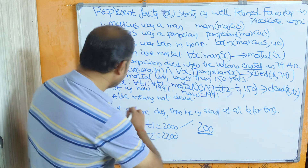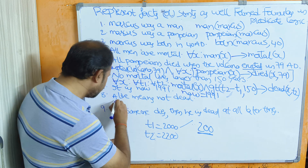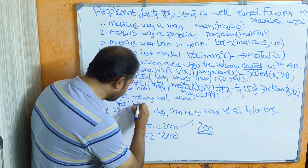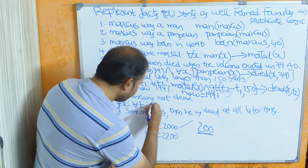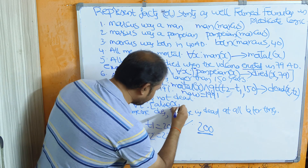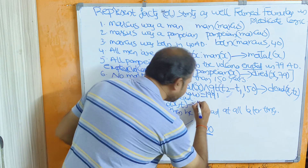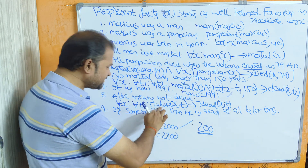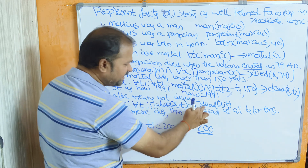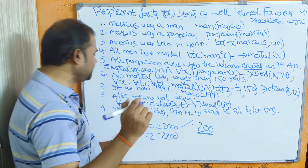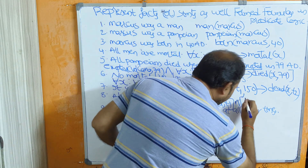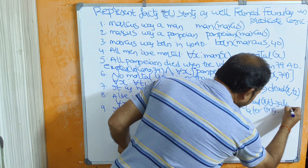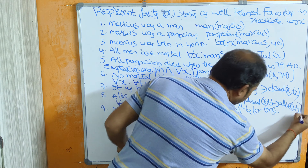Next: 'Alive means not dead.' For all x, if we let t represent a time, then if x is alive at time t, we can say that person is not dead at time t: alive(x, t) ↔ ¬dead(x, t). Conversely, if x is not dead at time t, then that person is alive at time t. Both directions are equivalent.